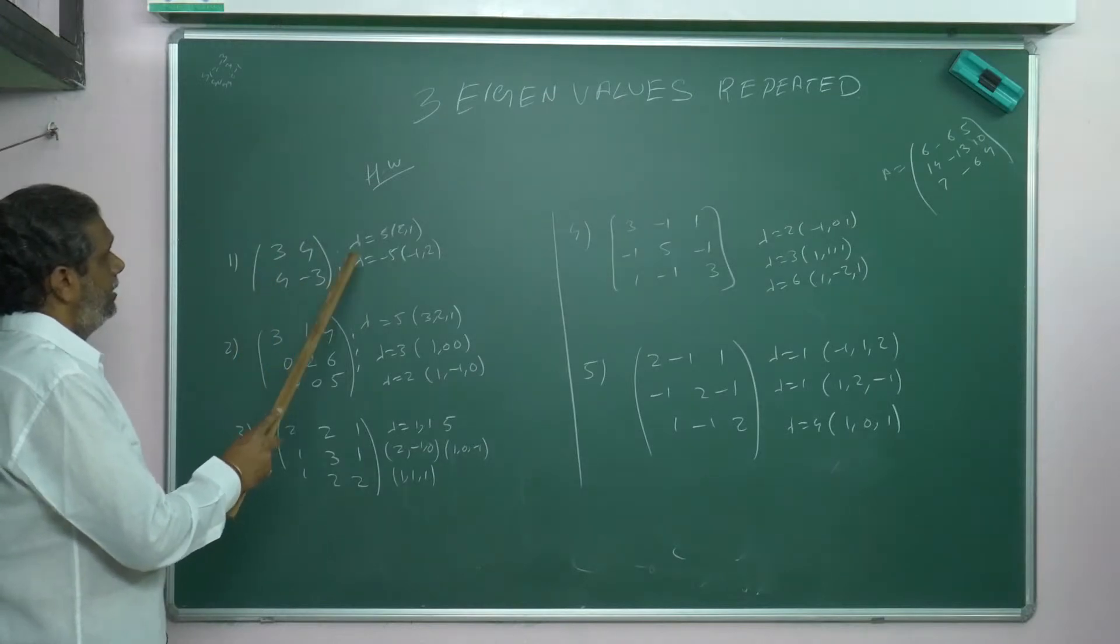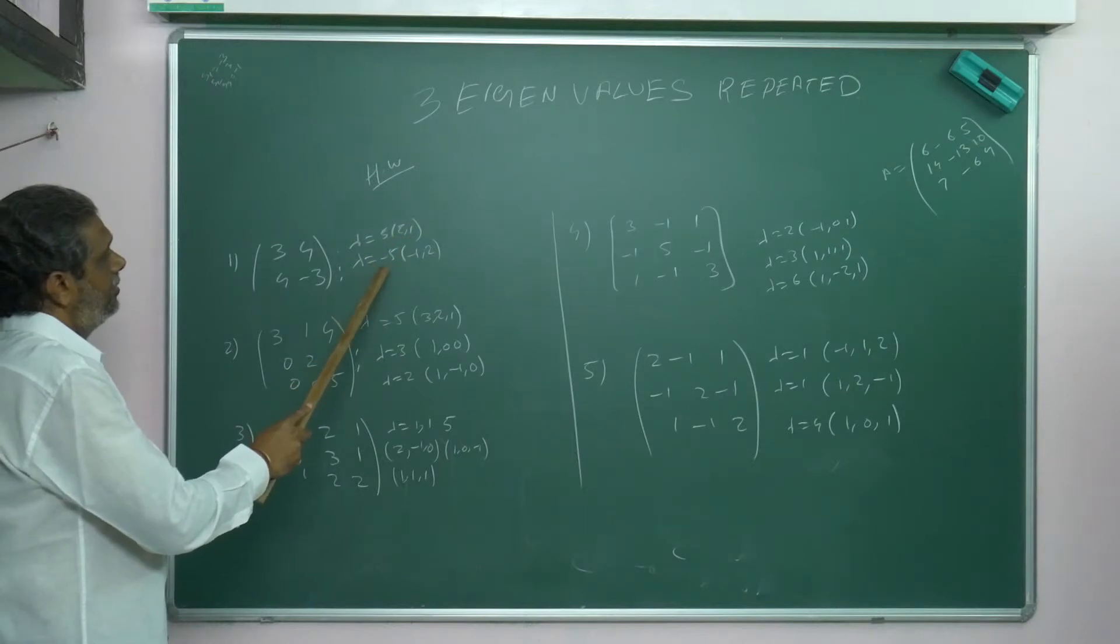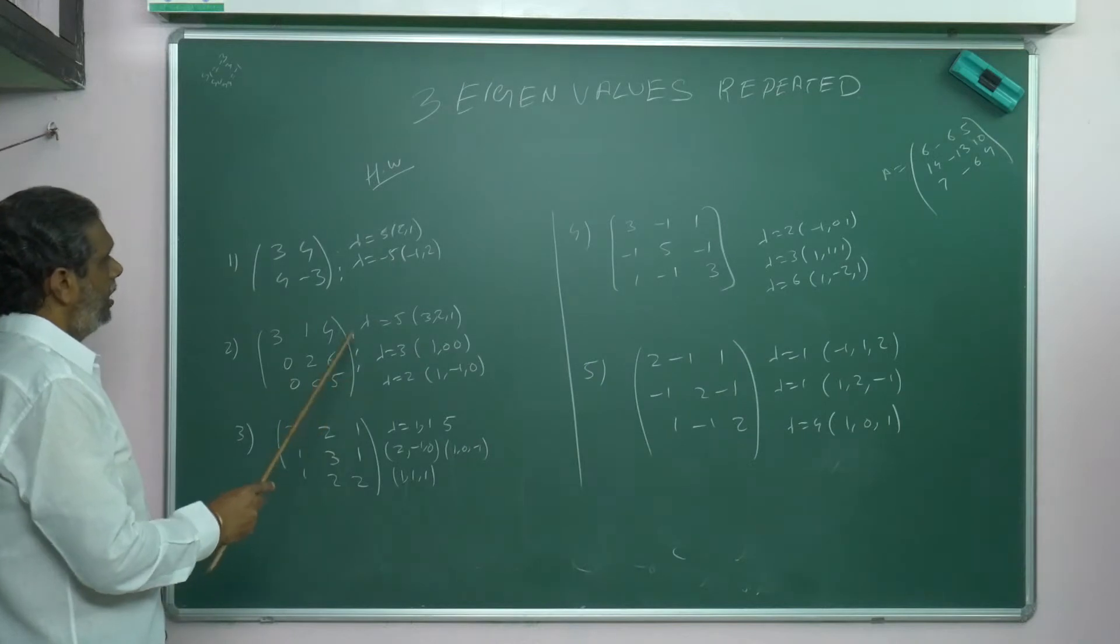First problem: 3, 4, 4, -3. Lambda equals 5, eigenvector is (2, 1). Lambda equals -5, eigenvector is (-1, 2). Second sum is a 3x3 matrix: 3, 1, 4, 0, 2, 6, 0, 0, 5. Eigenvalues are 5, 3, 2.